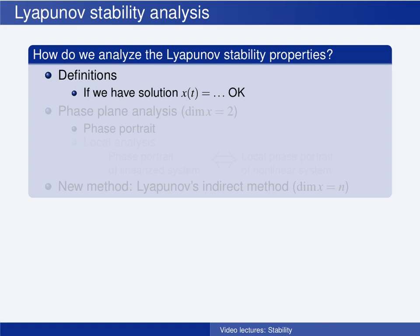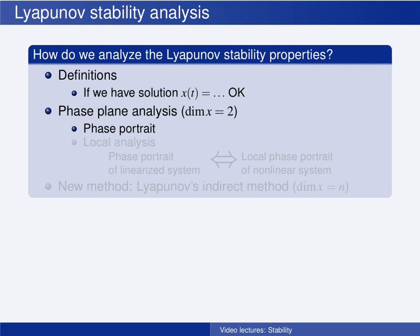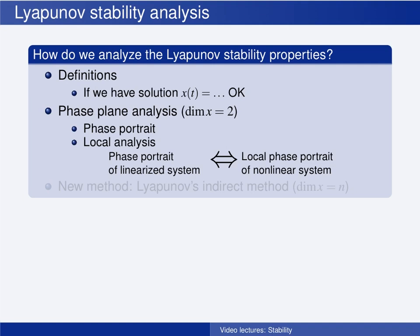So what do we do then? Through the pendulum examples illustrating the stability definitions, we saw how, when we have a phase portrait available, we can use the stability definitions to evaluate whether an equilibrium point is stable, unstable, or possibly asymptotically stable. Also, in the video about second-order time-invariant systems, you learned how to perform a local analysis to determine the qualitative behavior near an equilibrium point.